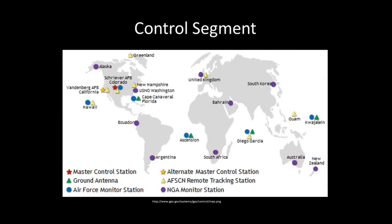The GPS control segment consists of a global network of ground facilities that track the GPS satellites, monitor their transmissions, perform analysis, and send commands and data to the constellation.